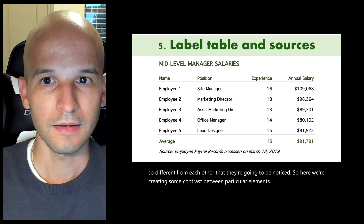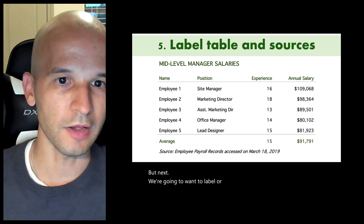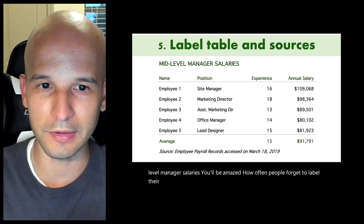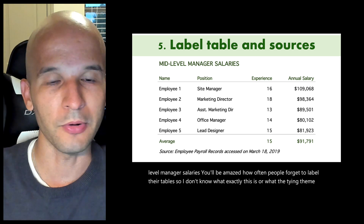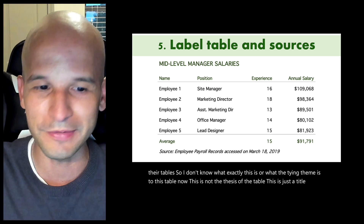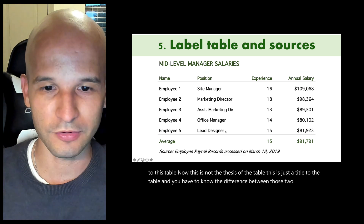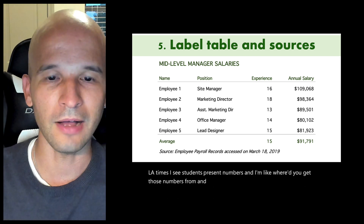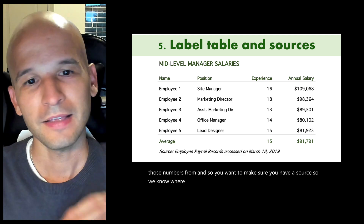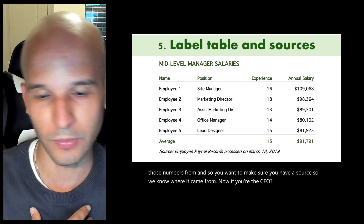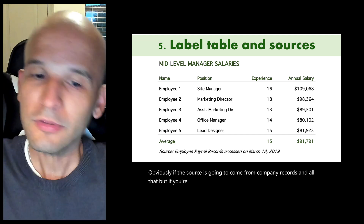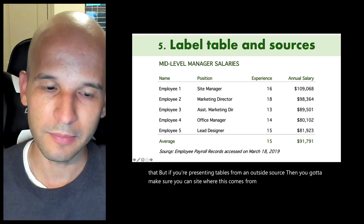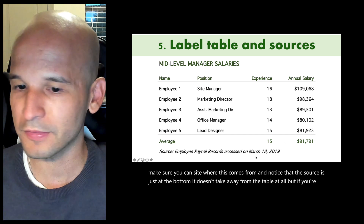Next, we're going to want to label our table and add sources. For example: mid-level manager salaries. You'd be amazed how often people forget to label their tables. This is just a title to the table — not the thesis. You also need a source — where did you get your numbers from? I often see students present numbers with no source cited. If you're presenting data from an outside source, make sure you can cite where it comes from. The source goes at the bottom and doesn't take away from the table at all.